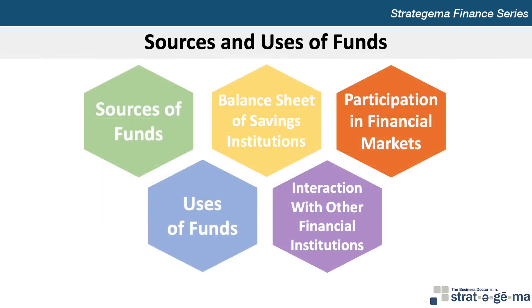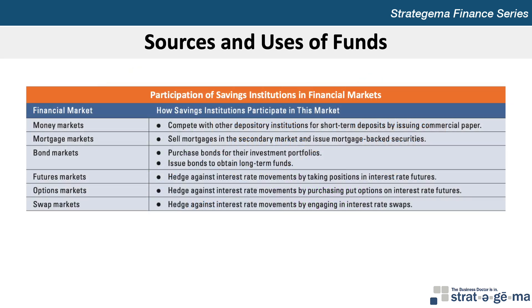After originating mortgages, SIs sometimes sell them to insurance companies or other financial institutions in the secondary market. Many SIs have other financial institutions as subsidiaries providing services including customer finance, trust companies, mortgage banking, discount brokerage, and insurance. SIs participate in various financial markets: they rely on mortgage markets when issuing mortgage-backed securities or selling mortgages in the secondary market, and engage with bond markets when issuing new bonds or buying and selling bonds issued by corporations or government agencies.